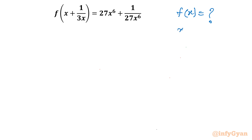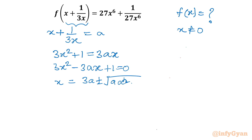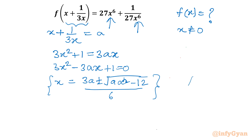As you can see, x cannot be 0. Let's begin with the conventional method: we consider x + 1/3x equal to a, and make this equation quadratic — 3x² + 1 = 3ax, so 3x² - 3ax + 1 = 0. From here, finding x as a function of a using the quadratic formula gives x = (3a ± √(9a² - 12)) / 6. That is not an easy task, and substituting back won't be easy either, so we won't follow this method.